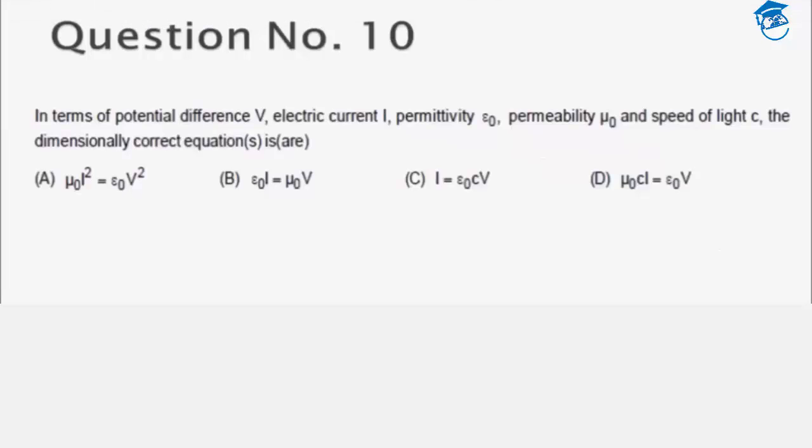The next question is quite easy, it is related to dimensional analysis. We are given the potential difference, electric current, permittivity, permeability and the speed of light, and we want to find out which equations are dimensionally correct.